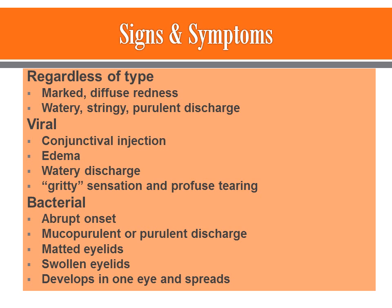Regardless of the type of conjunctivitis, all patients are going to have some type of marked diffuse redness as well as watery, stringy, and purulent discharge. With viral specifically, there is conjunctival injection, watery discharge, possible swelling, and burning, often with a concurrent upper respiratory infection. The patient may also have preauricular node enlargement or a gritty sensation in their eye.